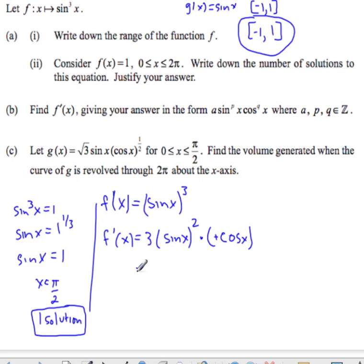So I believe this is already in the form 3 sine squared x cosine to the 1 x, so a is 3, p is 2, and q is 1.